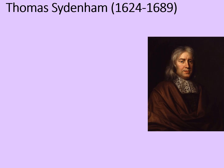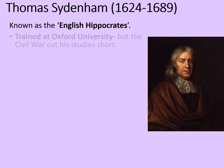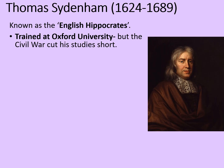Thomas Sydenham was born in 1624 and died in 1689, which is not a bad innings for back then. He was known as the English Hippocrates, partly because of the methods that he used, and he trained at Oxford University. However, the English Civil War in 1642 cut his studies short. That might have actually been helpful, though, because it meant that Sydenham began his studies and gained a familiarity with the basics, but then was more free to go out and seek his own ideas.